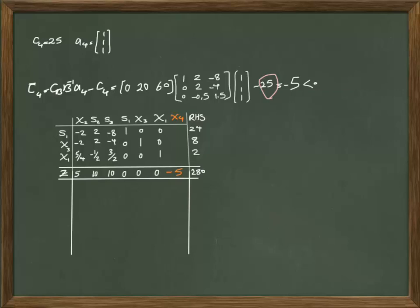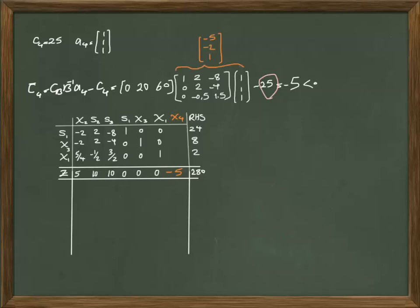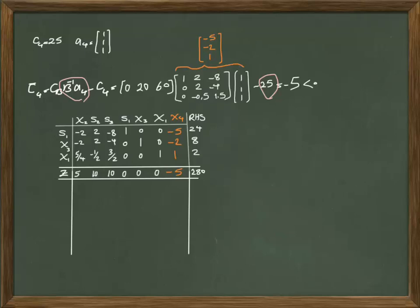Let's show this in a simplex table. The coefficient for X4 in the row of Z is negative 5. We can also fill in the column coefficients of X4 in the final table, which equal B inverse AJ — already computed as part of CBB inverse A4. This is your optimal table given that X4 was added at the beginning of the problem. As you can see, this table is not optimal anymore because of the negative value in the row of Z, which is a sign that you have to continue the simplex table.